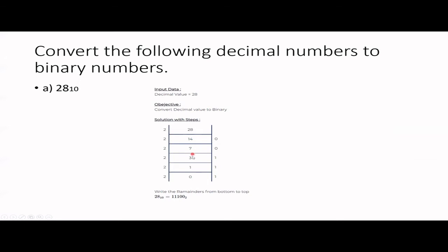Quotient is 7, no remainder. Divide 7 by 2: quotient is 3, remainder is 1 because 7 is odd. Divide 3 by 2: quotient is 1, remainder is 1. You don't stop here — continue until your quotient is 0. Divide 1 by 2: you cannot divide it evenly, so quotient is 0 and remainder is 1. Now write the remainders from bottom to top: 1, 1, 1, 0, 0. Never forget to put the base 2, otherwise your answer is wrong — without the base it's considered a decimal number, so your answer is wrong.